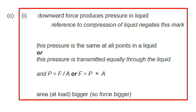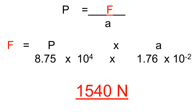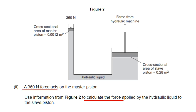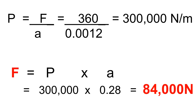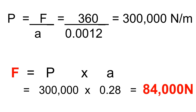Hydraulics exam answer: the downward force produces a pressure in the liquid; this pressure is transmitted equally through the liquid; because the area at the load is bigger, the force is bigger (F = P × A). Exam questions on hydraulics typically ask you to multiply pressure by area or rearrange for force.